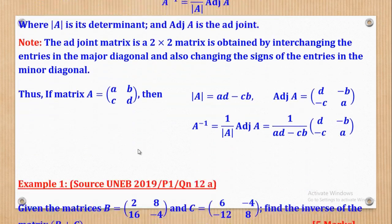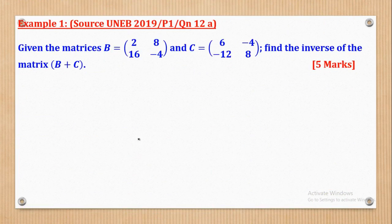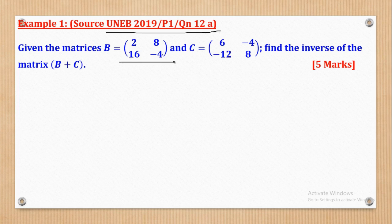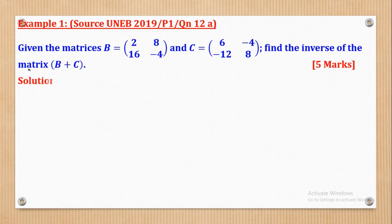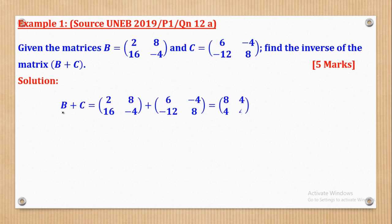We shall do a number of examples for you to grasp the concept. Example 1 came from UNEB 2019, paper 1, question 12a. It says: given the matrices B = [2, 8, 16, -4] and matrix C = [6, -4, -12, 8], find the inverse of B plus C. We have to first add the matrices to get the matrix of B plus C.